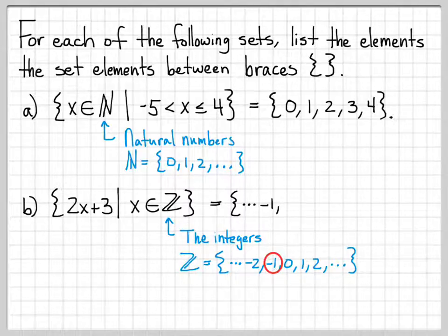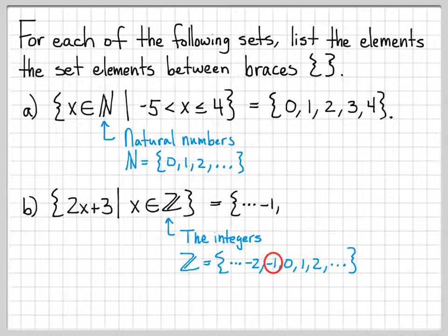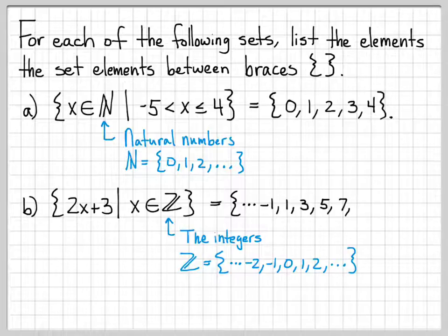When x is negative 1, plugging in gives negative 2 plus 3, which gives a value of 1. When x is 0, I get 0 plus 3, which is 3. When x is 1, I get 5. When x is 2, I get 7. It's pretty easy to see the pattern now — every new element goes up from the previous one by 2, which makes sense because this is basically a line with a slope of 2.